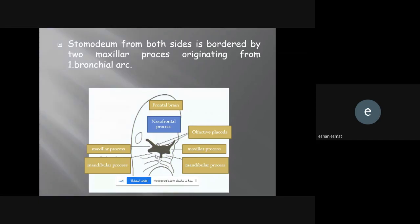The stomodium from both sides is bordered by two maxillary processes originating from the first branchial arch. You see here, this is the frontal brain, this is the frontal nasal process, this is the ophthalmic process, and this is the maxillary process and mandibular processes. By the time they will be fused.